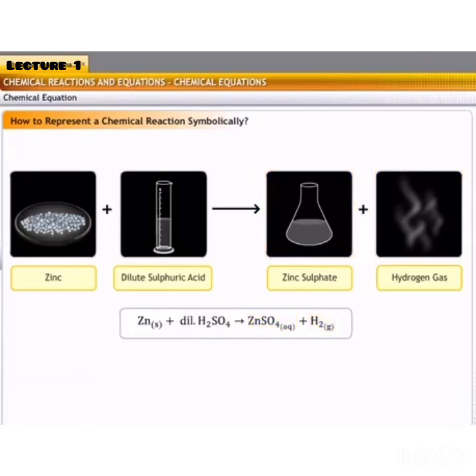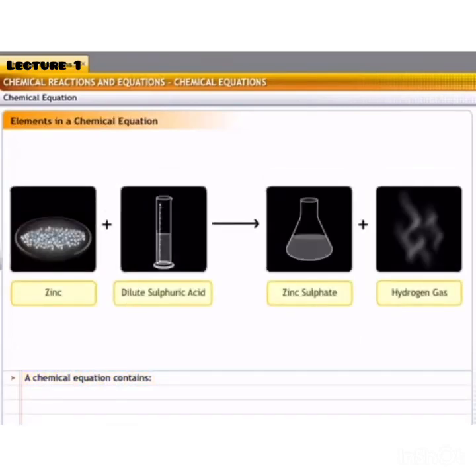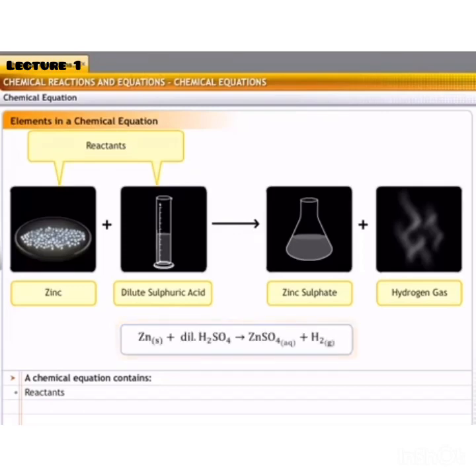So, this is the chemical equation. In a chemical equation, it involves reactants, which are always written on the left hand side. Like in this reaction, zinc and dilute sulphuric acid are reactants.